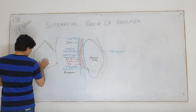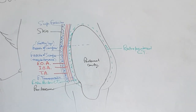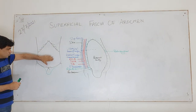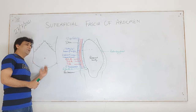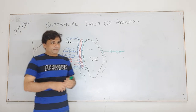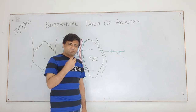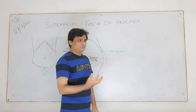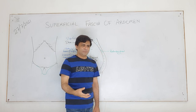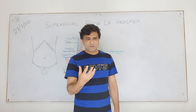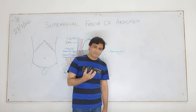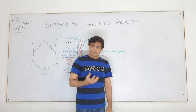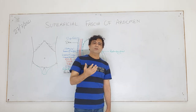Both layers of superficial fascia continue into the perineum. The superficial fatty layer continues but in the perineum, the superficial fascia covering the penis or clitoris is devoid of fat. The same superficial fascia - fascia of Camper - which continues into the perineum, when it covers the scrotum or labia majora, also develops cutaneous smooth muscle fibers, and that is called dartos. Because this is not a continuous sheet of muscle, you also call it dartos fascia.